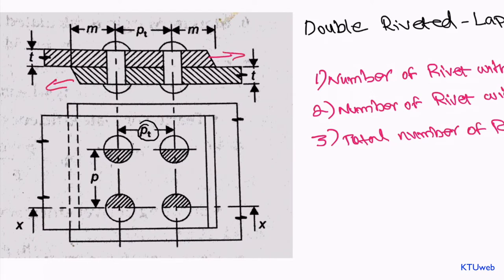Let us discuss single shear and double shear. Suppose you apply a shear force — a lap joint will shear into two pieces, meaning the rivet will shear off into two, and you can find a shear surface. If you take any single rivet, the shearing occurs on a single plane because it connects two plates. This kind of shearing is what we call a rivet with single shear. In any lap joint, you will find rivets with single shear only.